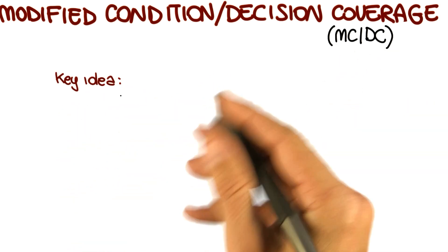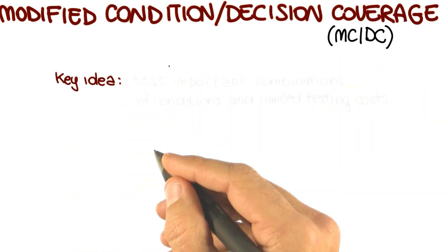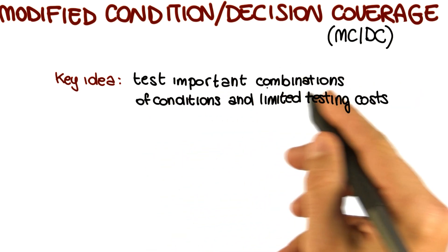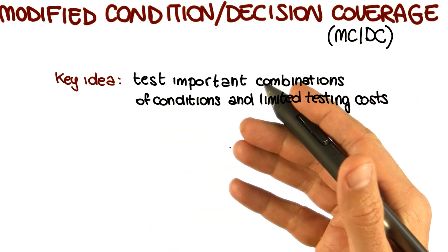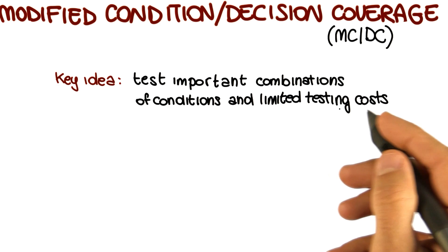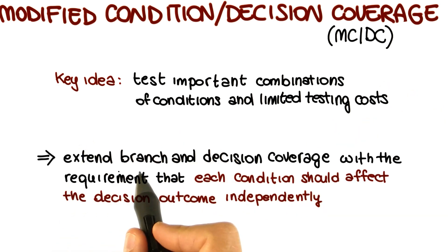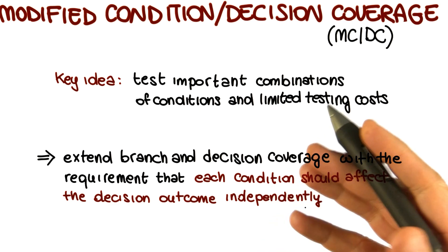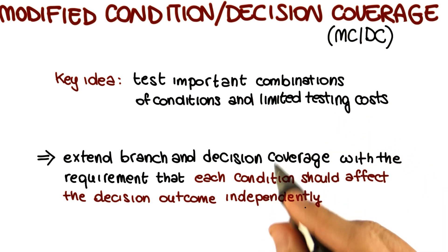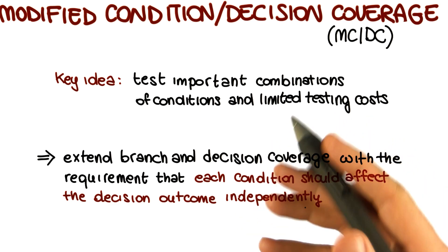What is the key idea behind the MC/DC criterion? It is to test only the important combinations of conditions instead of all of them, and limit testing costs by excluding other combinations. The way it works is by extending branch and decision coverage with the requirement that each condition should affect the decision outcome independently. Let's see what this means with an example that will show how you can reduce the number of combinations.